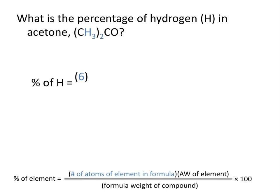So remember the 2 outside of parentheses tells us that there are 2 CH3 groups in acetone, which would mean that there are 6 total hydrogen atoms.